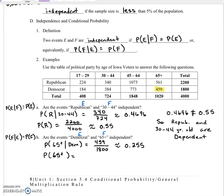So the number of 65 plus year old people we have is 1020. And we want to divide that by 4000. And when we do that, we get 0.255.